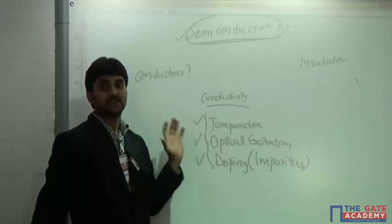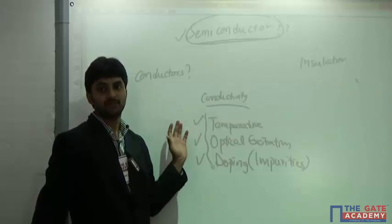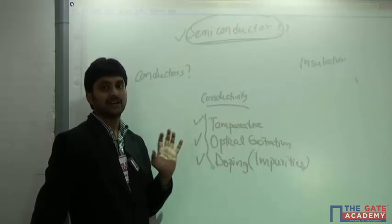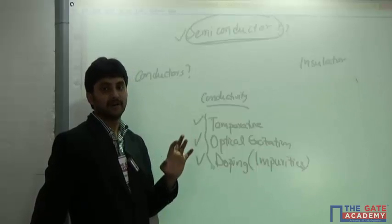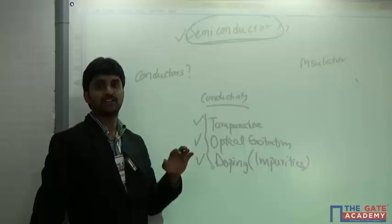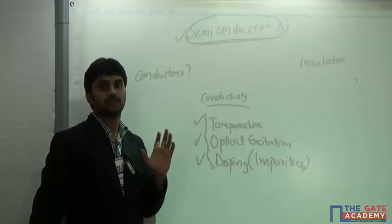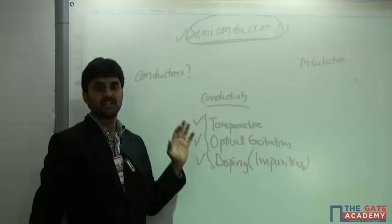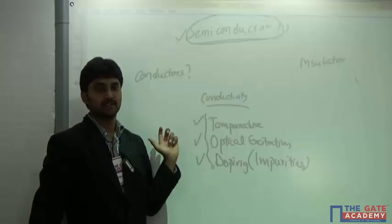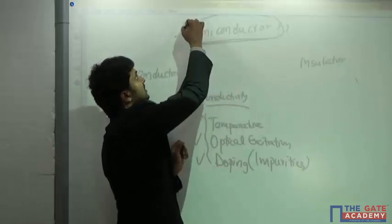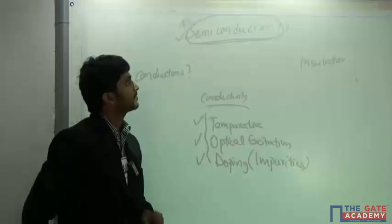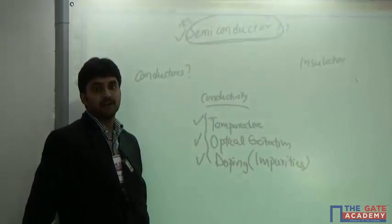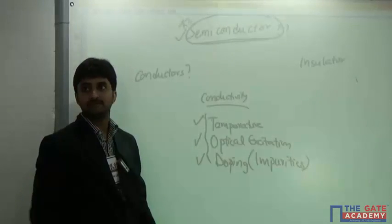That is the reason semiconductors are majorly used in electronic devices and circuits. Electronics is not just about the flow of electrons — it is about the control of the flow of electrons, which you can achieve only with semiconductors. This is the best material available for operation in electronic devices.